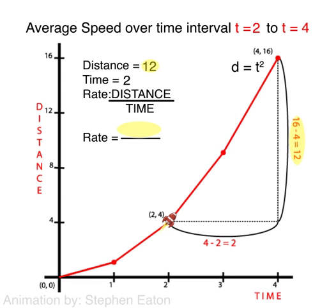At time 2, we have reached a distance of 4 miles. Subtract that from the total distance of 16, and we are left with 12 miles. We then divide 12 by our change in time, which is 2 minutes. 12 over 2 is 6 miles per minute.